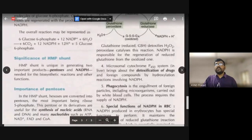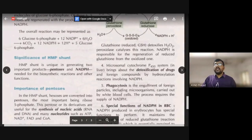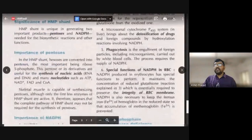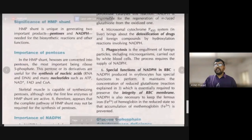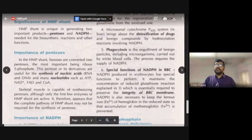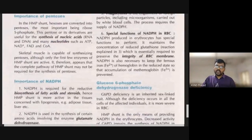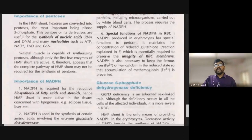NADPH is used in the microsomal cytochrome P450 system for drug metabolism. It is also used in phagocytosis — when pathogens enter, white blood cells use NADPH for the respiratory burst. NADPH is essential in RBC cells; it maintains glutathione in reduced form, protecting red blood cells from oxidative damage. NADPH is also used for fatty acid synthesis, cholesterol synthesis, and steroid synthesis. This is produced exclusively in the HMP pathway, unlike in the TCA cycle where NADH is formed.